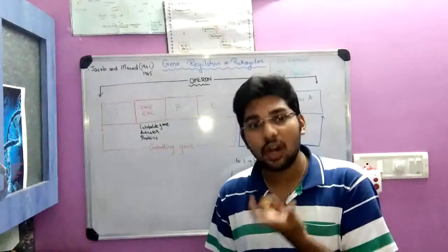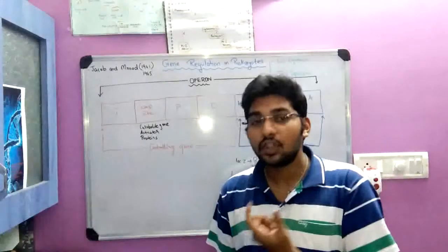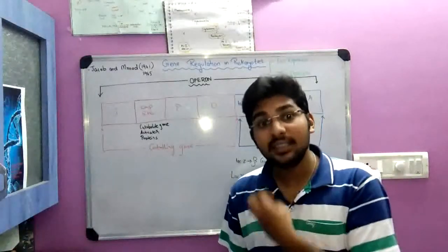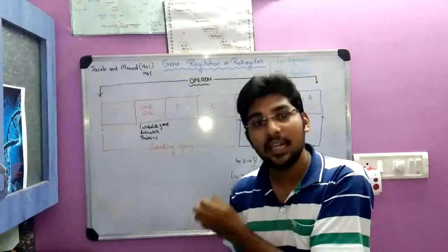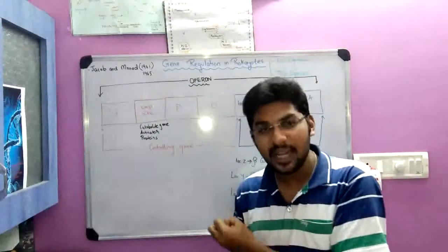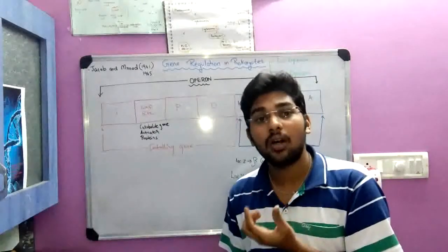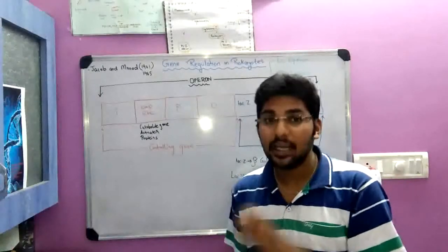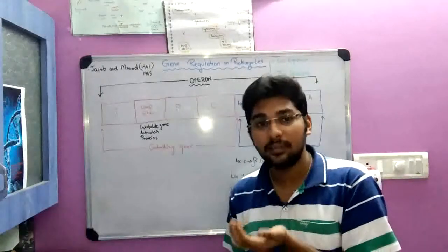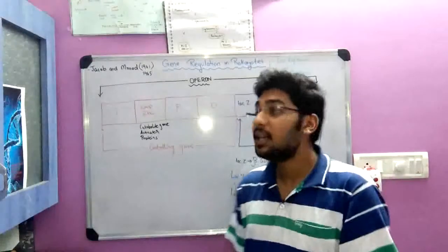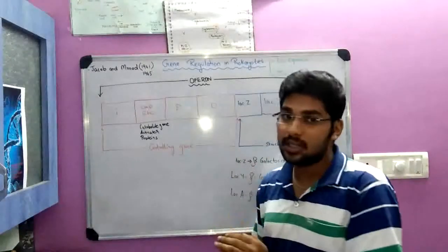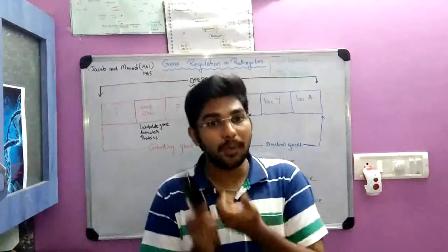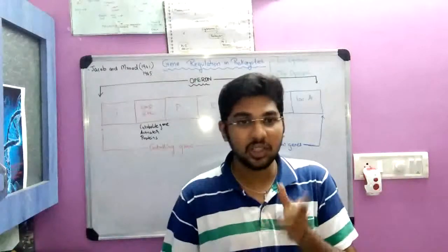'Lac' is the short form for lactose, which is a disaccharide. This experiment was done in E. coli — how this bacteria consumes lactose and how it is broken down. That catabolic process is called the lac operon concept. 'Operon' means it is a cluster of genes.